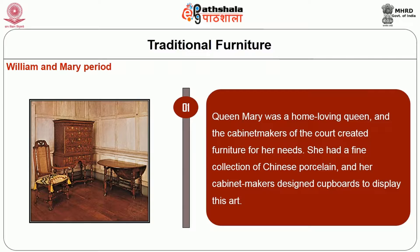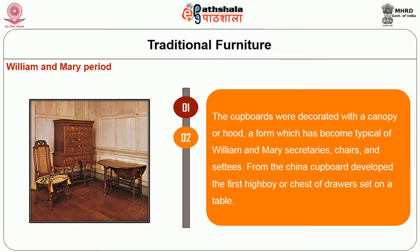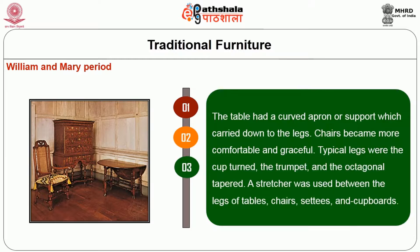She had a fine collection of Chinese porcelain and her cabinet makers designed cupboards to display this art. The cupboards were decorated with a canopy or hood, a form which has become typical of William and Mary secretaries. From the china cupboard developed the first high boy or chest of drawers set on a table. The table had a curved apron which carried down to the leg. Chairs became more comfortable and graceful; typical legs were cup turned and trumpet, and the octagonal tapered. A stretcher was used between the legs of tables, chairs, settees, and cupboards.